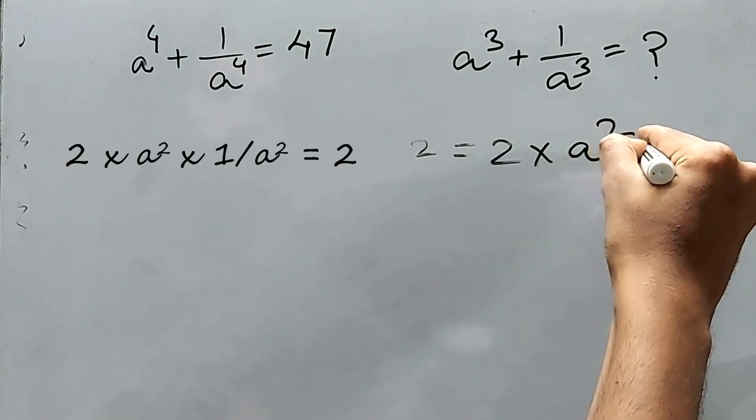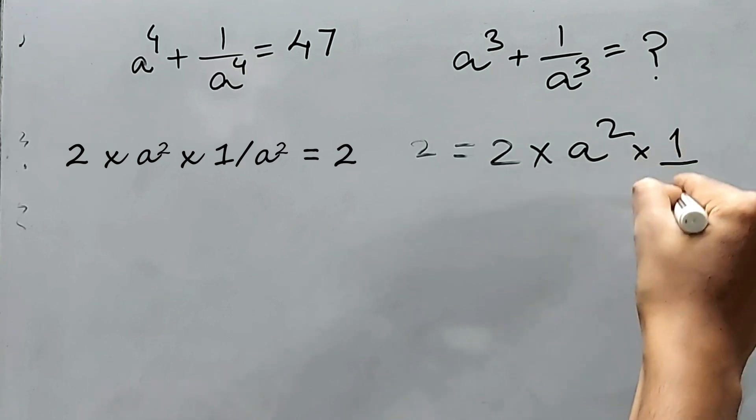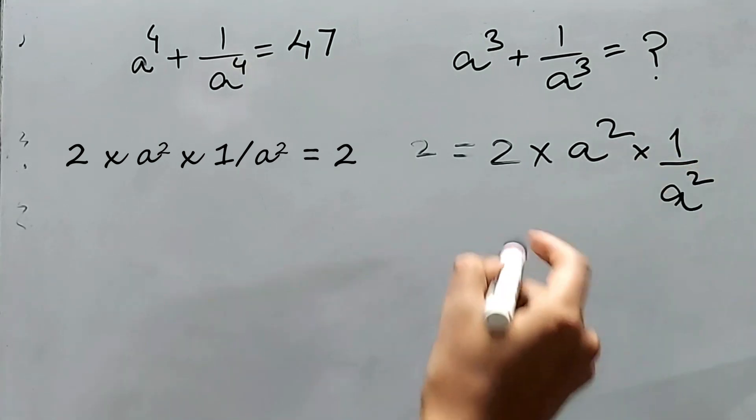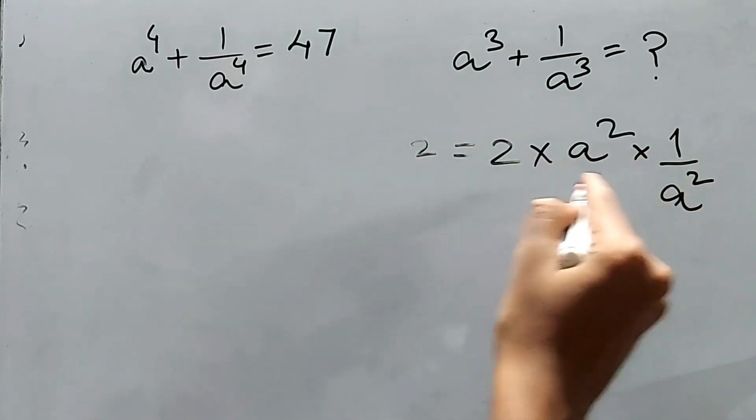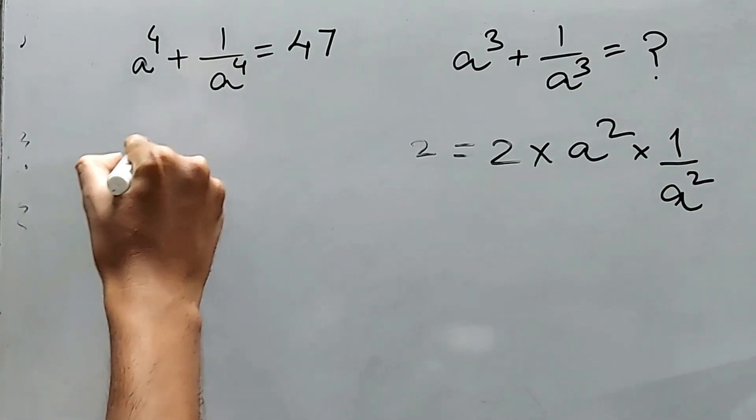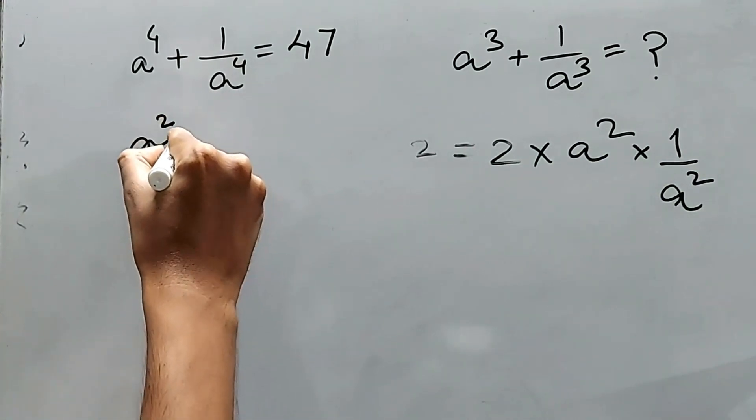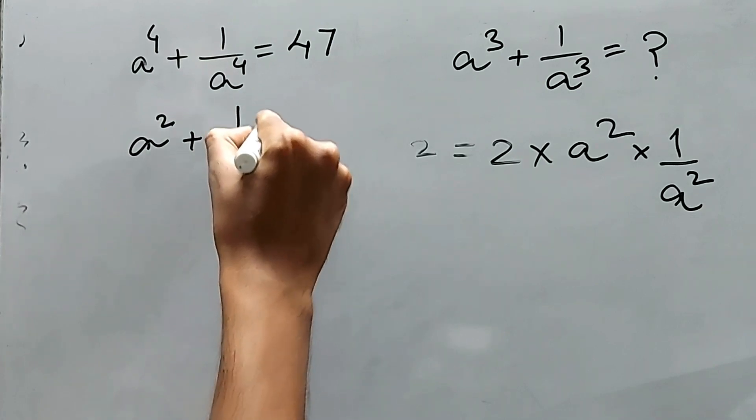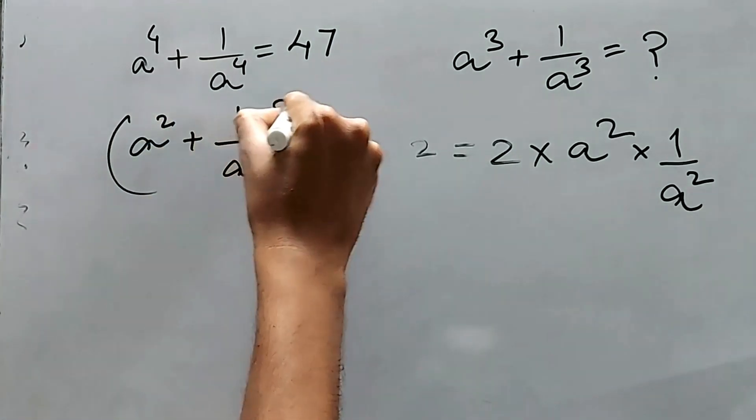This is 2ab, so we can write (a^2 + 1/a^2) whole square.